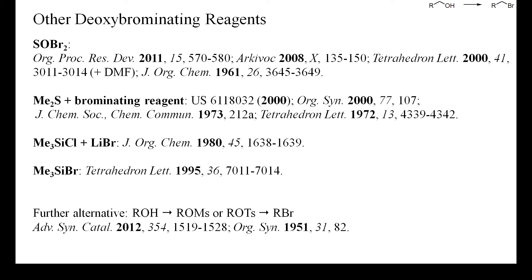One alternative to direct one-step deoxybrominations that should always be considered is the preparation of a mesylate or tosylate followed by SN2 displacement with bromide. Mesylate formation proceeds under mild conditions in high yields, and because bromide is only weakly basic, nucleophilic substitutions with bromide do usually not cause any unexpected side reactions.